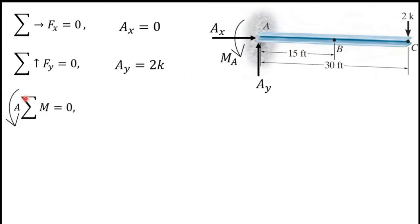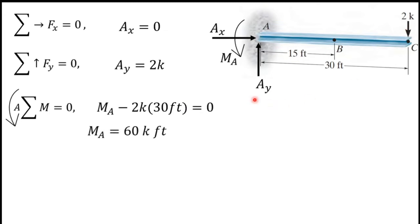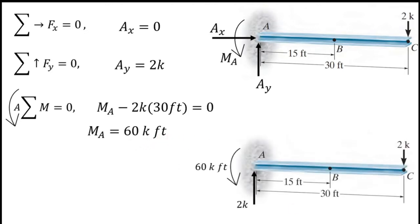Next, taking the moment about point A: Ma minus 2k times 30 feet equals 0, giving Ma equals 60 k·ft. So the support reaction at A is 2k and the moment at A is 60 k·ft. This is the free body diagram. Next we need to draw the bending moment diagram for this beam.